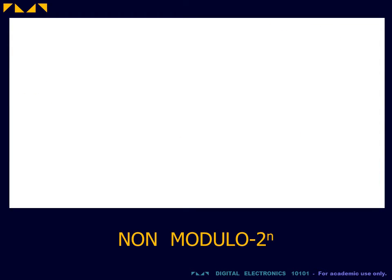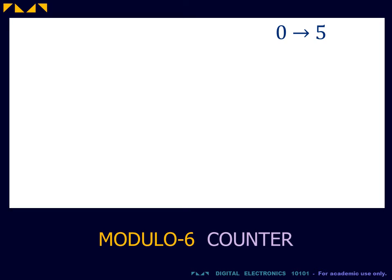We will now design a counter that has a modulo value that is not a power of 2. In our example, we will construct a modulo 6, 0 to 5 counter.